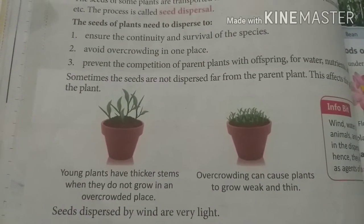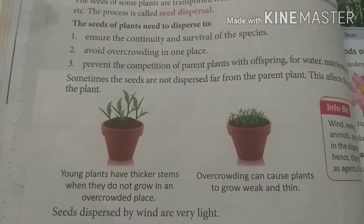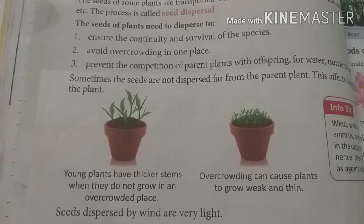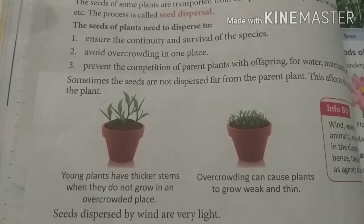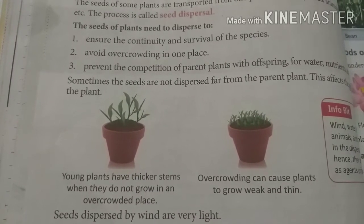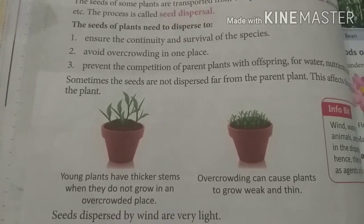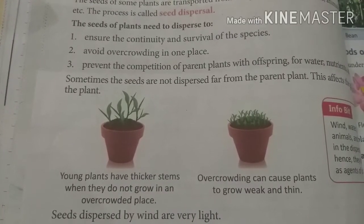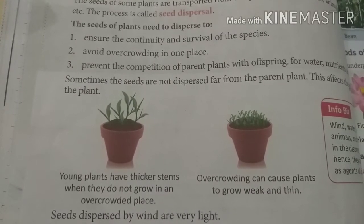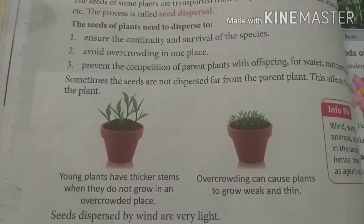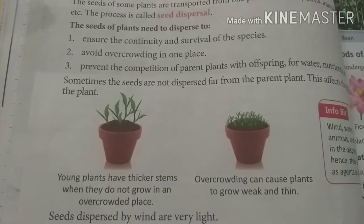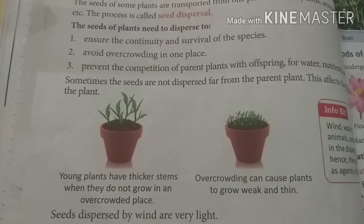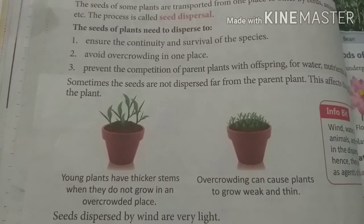So why do plants disperse? First, for survival of the species — to survive in appropriate conditions. Second, to avoid overcrowding. Third, to prevent competition with their parents. In one place, air, water, and sunlight are not sufficient, so plants disperse from one place to another to get appropriate conditions.